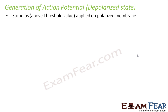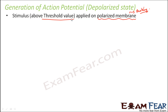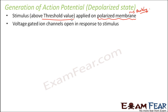When the stimulus is applied to the polarized membrane — the membrane which was in the resting phase — and you apply a stimulus which is above the threshold value, the voltage-gated ion channels will open in response to the stimulus. Threshold value means the bare minimum value that has to be applied in order to excite the neurons.